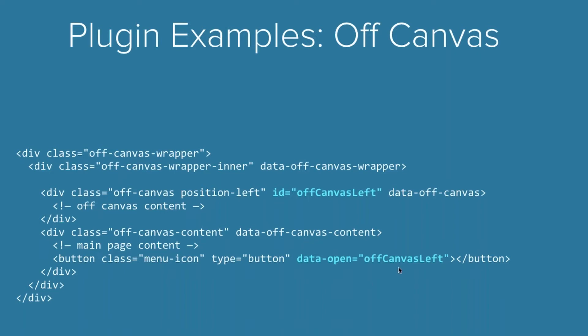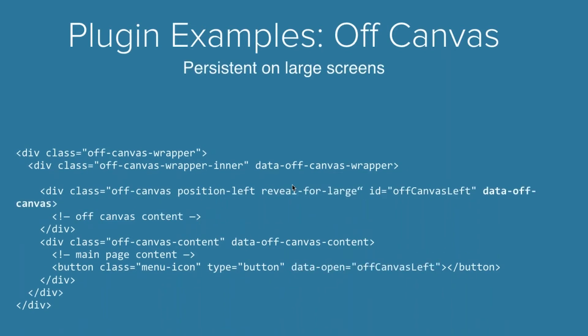For some more advanced uses, you can make it persistent on large screens by simply adding 'reveal for large' or 'reveal for medium' — whichever size breakpoint you want to start it on. Add that and it will by default show when you're on that breakpoint.